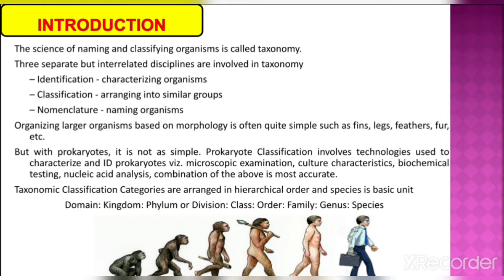The science of naming and classifying organisms is taxonomy, which totally depends on identification, classification, and nomenclature of each and every organism. Nomenclature or taxonomy is very easy as far as eukaryotic organisms are concerned. But in the case of prokaryotic organisms, it is not that easy because we have to understand different characteristics such as microscopic, cultural, biochemical, and nucleic acid analysis. The species is the basic unit of life.